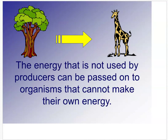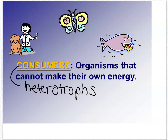The energy not used by producers can be passed on to organisms that cannot make their own energy — we call those consumers. If you eat a plant, you're a consumer. Consumers are organisms that cannot make their own energy. Energy is used for keeping body temperature up and for growth. Consumers are also called heterotrophs.